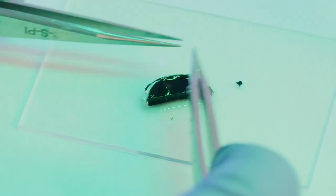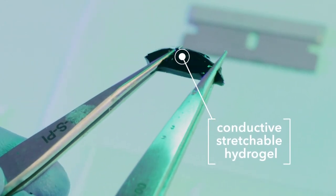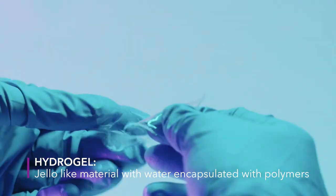The material that I've developed is a conductive stretchable hydrogel. Hydrogel is a material that consists of polymers but also has a high content of water. And because of that, it's able to largely mimic the mechanical properties of soft biological tissue.